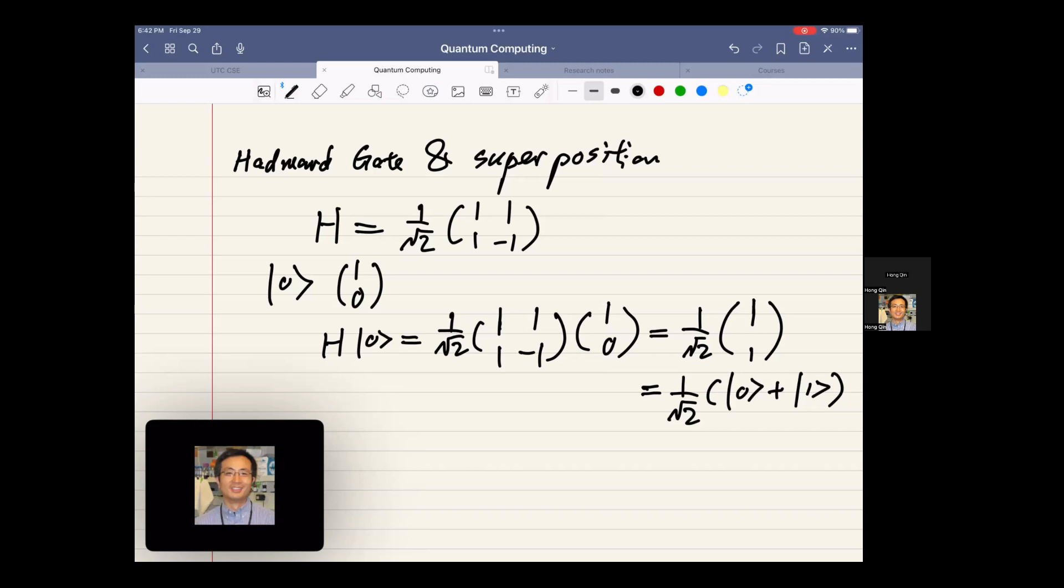With each state having a non-zero amplitude of 1 over square root of 2, and they are the same amplitude, which means each state has a 50% chance of being observed when we measure this qubit. This probabilistic nature of this state upon measurement is what we call superposition.